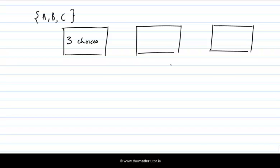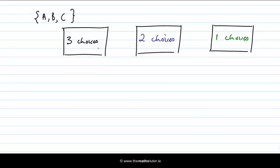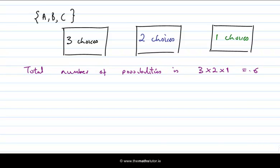Once we've made a choice for the first box, there are only two letters left, so there are two choices for the second box. For example, if we put a C into the first box, we'd only have A or B left — we can't repeat the C. Then after making our first two choices, there's only one letter left for the third box, so there's only one choice. By the fundamental principle of counting, the total number of possibilities is three times two times one, which is six.